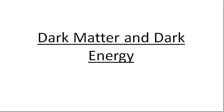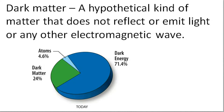Welcome to this video on dark matter and dark energy. What is dark matter? It's a hypothetical kind of matter, and because it doesn't reflect or emit light, we can't see it with our telescopes — it's invisible. This dark matter accounts for about 84% of the matter in the universe, so we know virtually nothing about 84% of the universe.